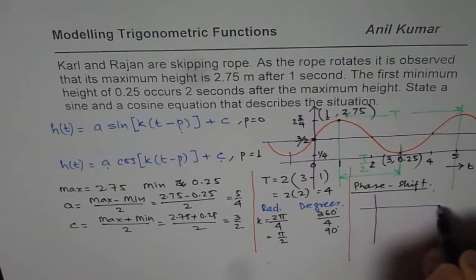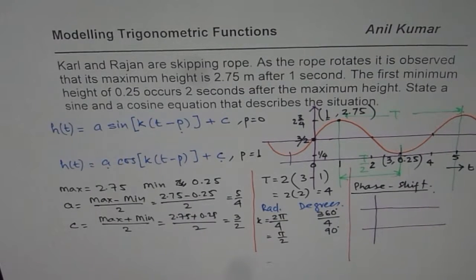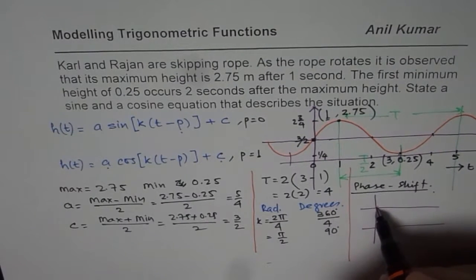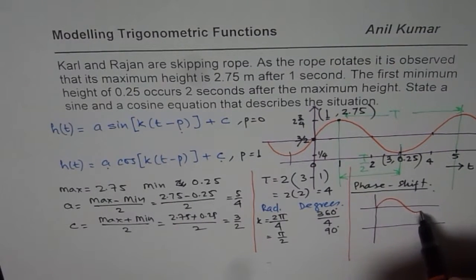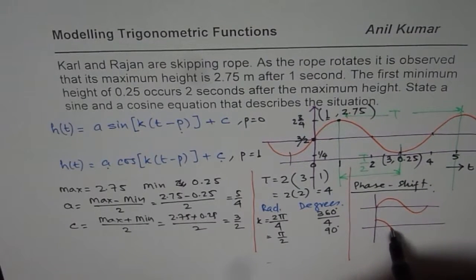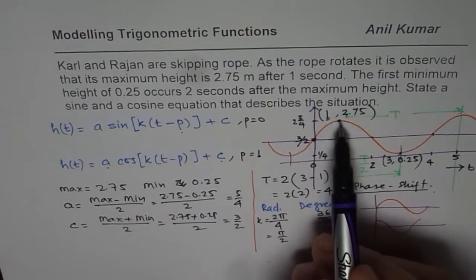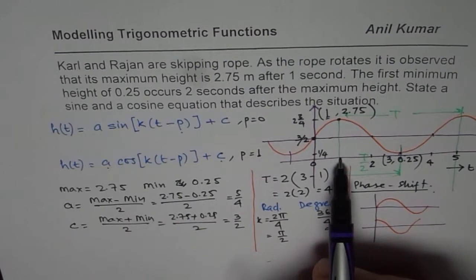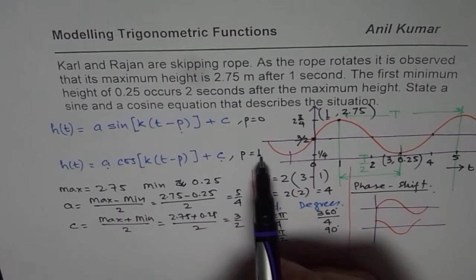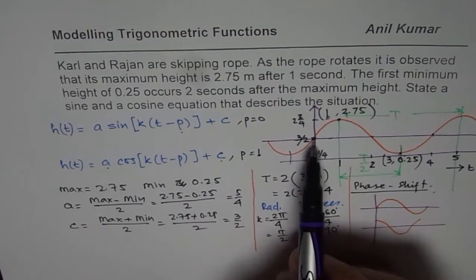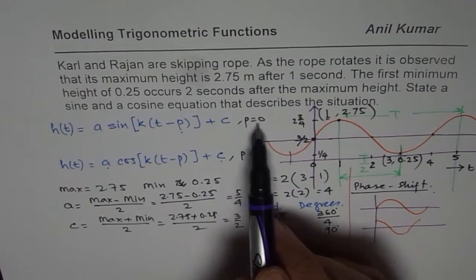Let me just draw both the graphs here to explain the concept. Sine wave starts rising up from the axis. This is my axis. And as far as the cosine wave is concerned, it is from maximum. So the maximum here starts after one unit of time, therefore P is one. Sine wave starts right there at the axis, so P is zero.